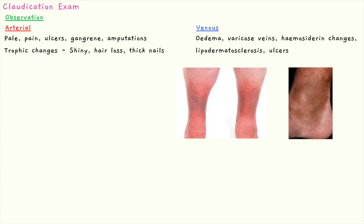The next main cause is venous causes. This may manifest with edema or swelling, typically bilateral pitting edema, varicose veins, and these pictures show lipodermatosclerosis as well as hemosiderin changes. On the right you see darkened deposits, and for the lipodermatosclerosis you see thickened skin and thickened legs. You can also have ulcers, typically on the medial malleolus side.